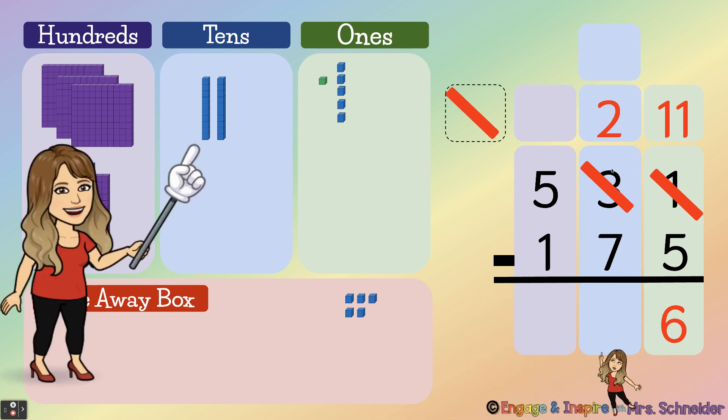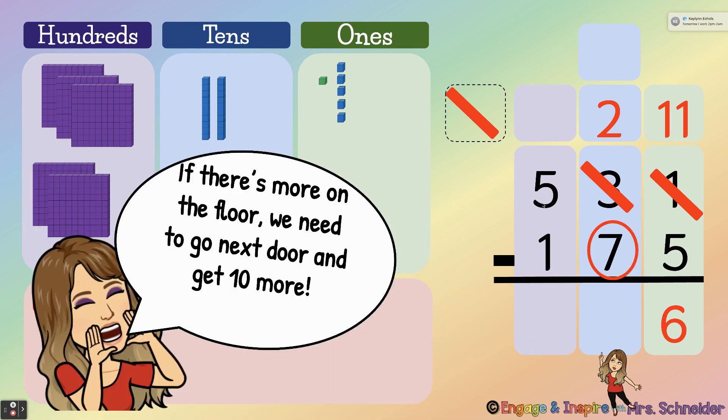Next we subtract our tens. Here I have two tens and I need to take seven away. Uh-oh, I don't have enough tens, right? I'm going to ask myself do I have more on the top or more on the floor? Well, there's more on the floor. So if there's more on the floor I'm gonna go next door and get ten more.